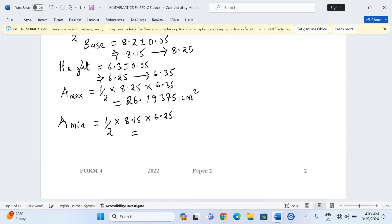Then when this is carried out, we're going to have half multiplied by 8.15 multiplied by 6.25. This is going to give us 25.46875 square centimeters.